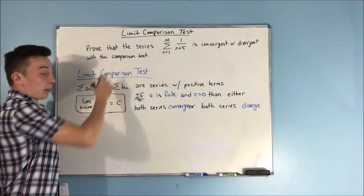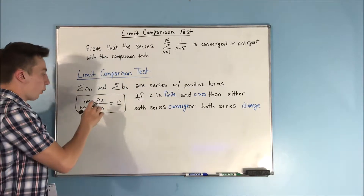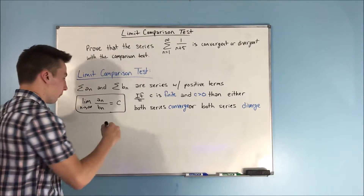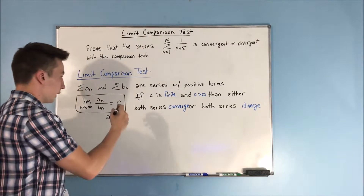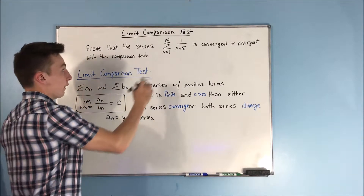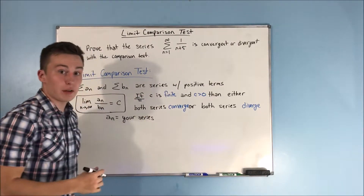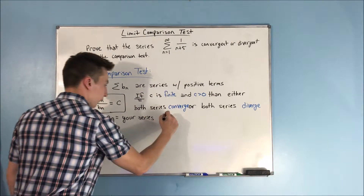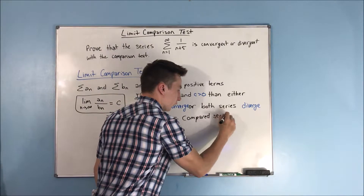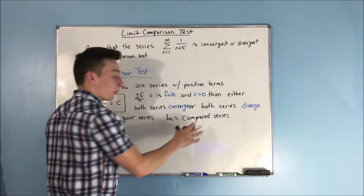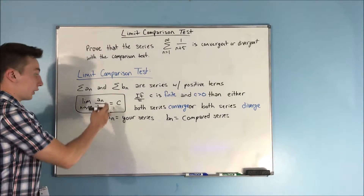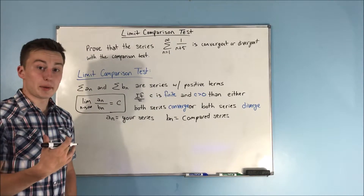Before we do this problem with the limit comparison test, we need to go over what a sub n and b sub n actually are. To make this as simple as possible: a sub n is just going to be your series — so that's 1 over n plus 5. And b sub n is going to be the compared series. Now you know what to put into the limit.